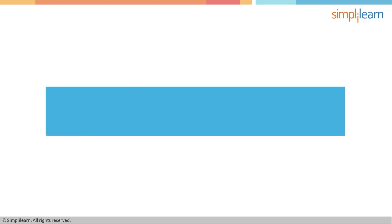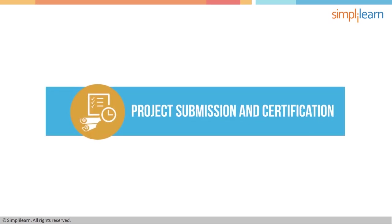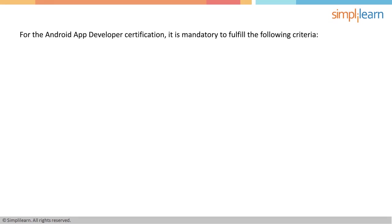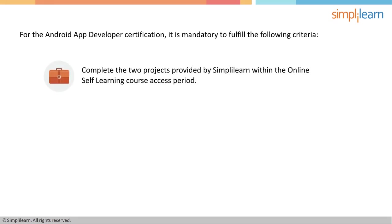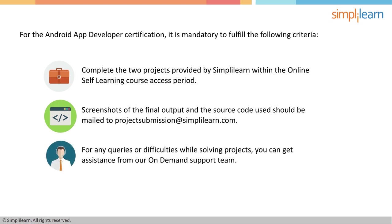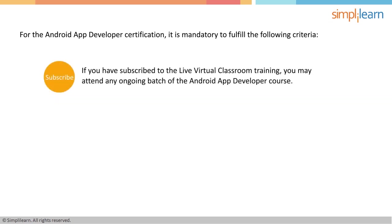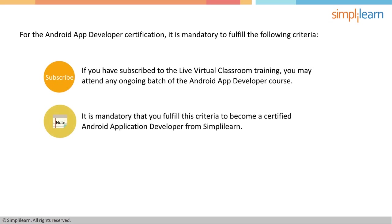Once you complete the course successfully, we award you a certificate in Android application development showcasing your skill set. For the Android App Developer Certification, it is mandatory to complete the two projects provided by Simply Learn within the online self-learning course access period. Screenshots of the final output and the source code used should be mailed to project submission at simplylearn.com. The completed project will be evaluated by the lead trainer. For queries or difficulties, you can use on-demand support, or if subscribed to the live virtual classroom, attend any ongoing batch for assistance.